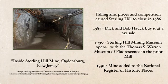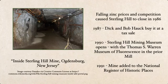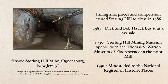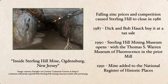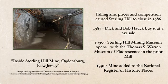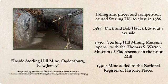Falling zinc prices and competition caused Sterling Hill to close in 1986, but fortunately in 1987, two area brothers bought it at a tax sale. They were fascinated by minerals — fluorescent minerals and minerals in general — and were terrified the property would be bought and turned into something else, and the area's geologic history would be lost. So they decided to reopen everything as a museum.